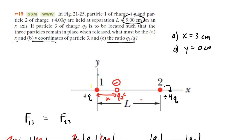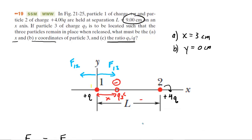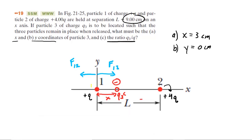One force is an attractive force: Q3, which is negative, pulls Q1 to the right — we call that F13. At the same time, particle two, which is positive, repels the charge at the origin, also positive, so we have a repulsive force to the left, indicated by F12. Since all three charges remain at rest with no acceleration, these two forces must be equal in magnitude, so we set F12 equal to F13.